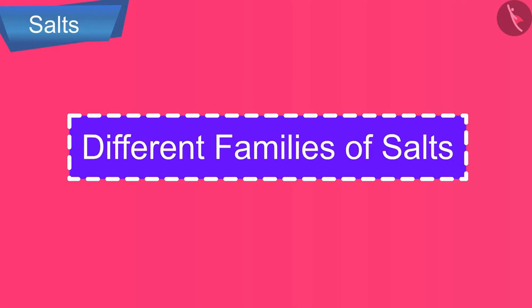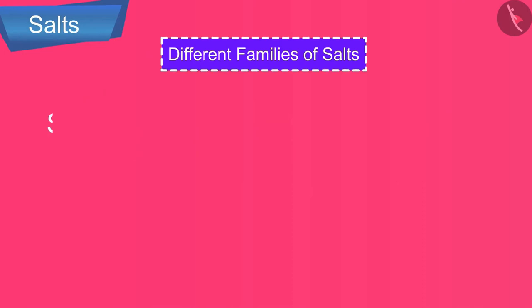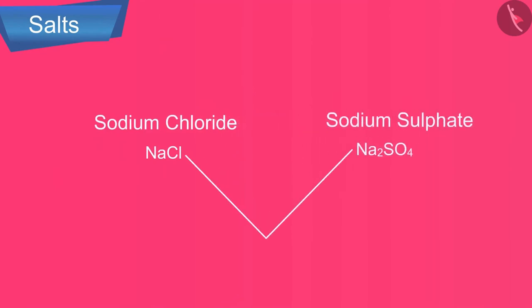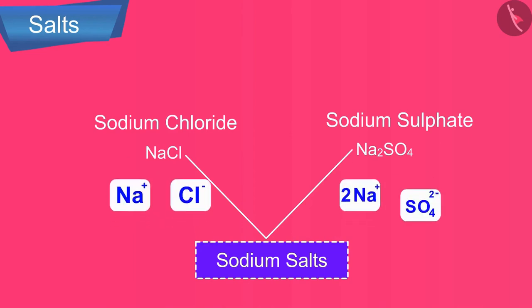Now, let us discuss about the different families of salts. The salts having the same positive ion or the same negative ion are said to belong to a family. For example, sodium chloride and sodium sulfate both belong to the same family of salts called sodium salts, because they both contain same positively charged ions, sodium ions, Na plus.